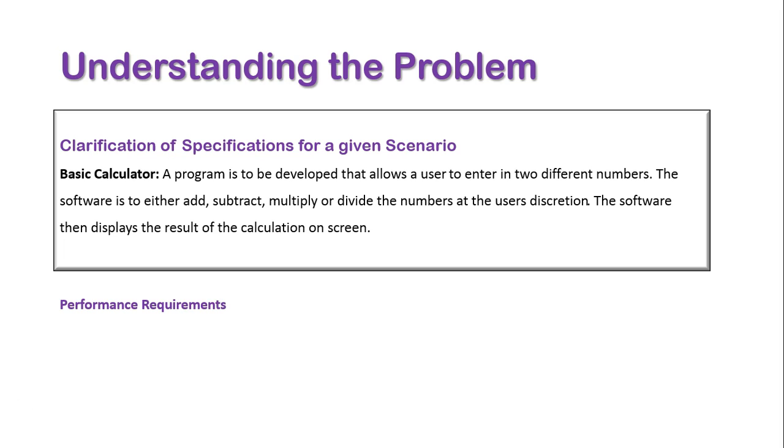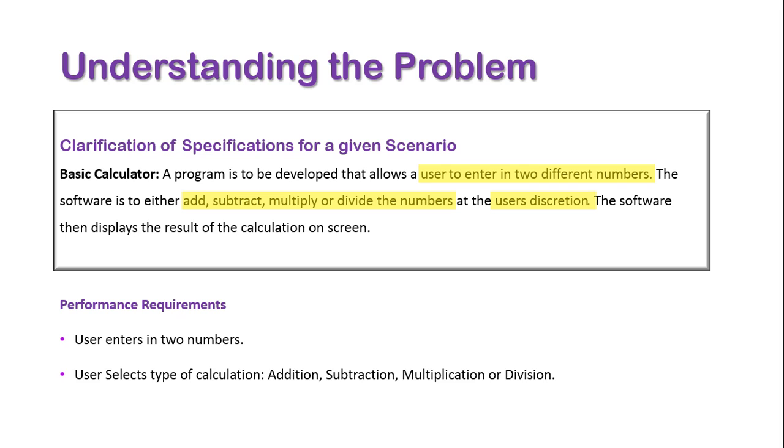We'll determine the requirements based on this specification. The performance requirements are: first, the user must enter two different numbers; second, they must be able to add, subtract, multiply, or divide at their discretion; and third, the calculation must appear on screen. These are our three performance requirements for this software, giving us an overview of our system targets.